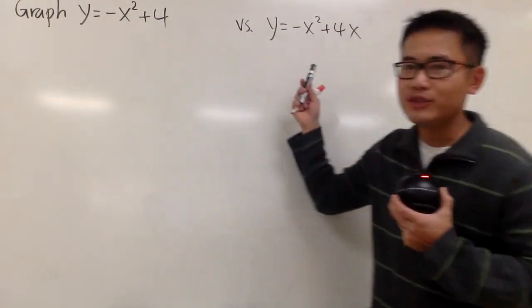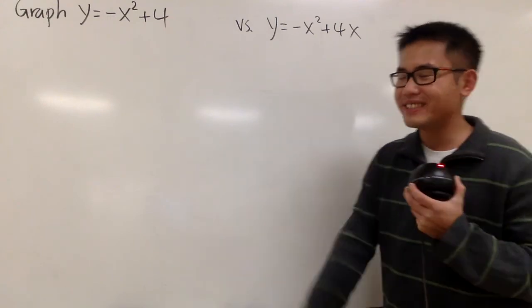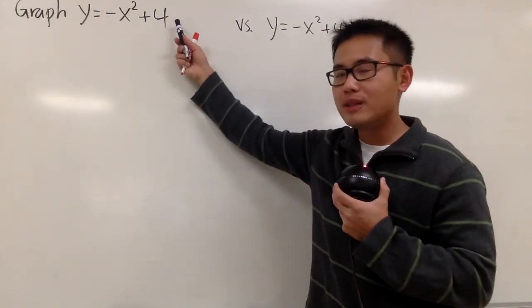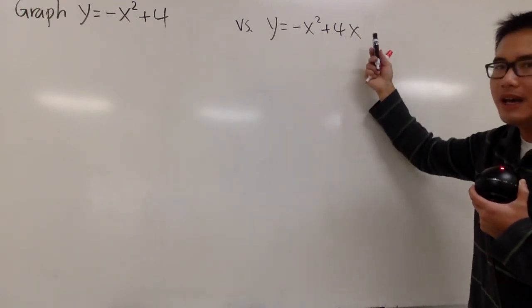Okay, we're going to graph these two equations, and notice that they are pretty similar, but of course they are also different. The difference is that right here, this is just a plus 4, but here, this is plus 4x.